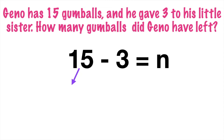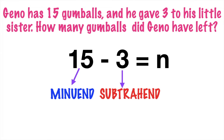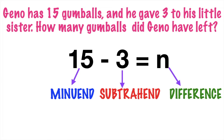Where 15 is what we call the minuend — it is the number from which we subtract. 3 is the subtrahend, which is the number that we subtract from the minuend. And n is the missing difference. The difference is the answer in subtraction.